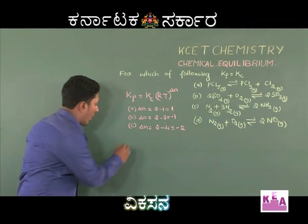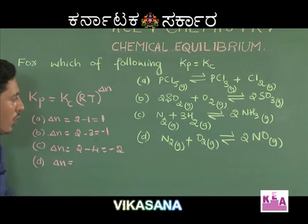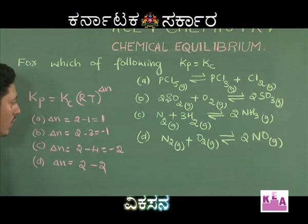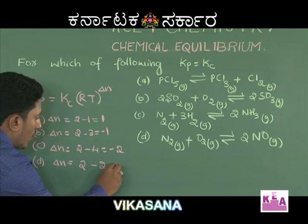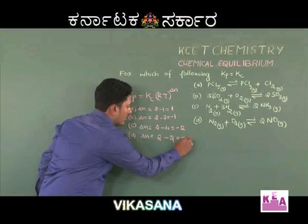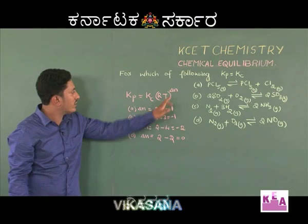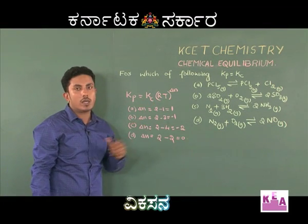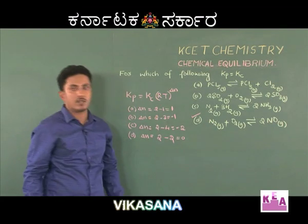For option D, ΔN equals 2 moles of NO minus (1 mole of nitrogen plus 1 mole of oxygen) = 2 − 2 = 0. Hence, for option D, ΔN equals 0. If we substitute ΔN = 0, Kp will be equal to Kc. Hence, option D is the right answer.